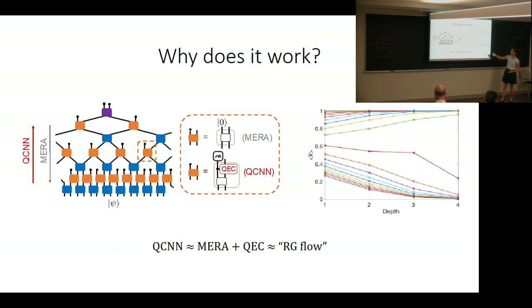this quantum CNN circuit looks very similar to the entanglement renormalization circuit, except it runs in reverse direction. This entanglement renormalization has isometries